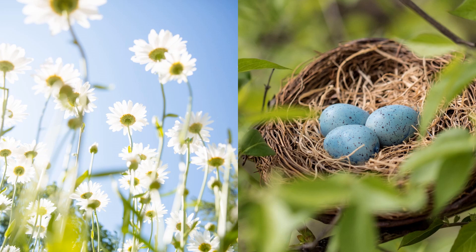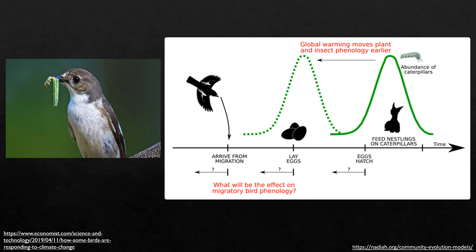Often the earlier arrival of one species directly affects the life cycle of another, and in a changing climate this can cause some issues. An example of this in Europe is the relationship between the pied flycatcher and their prey, the caterpillar.